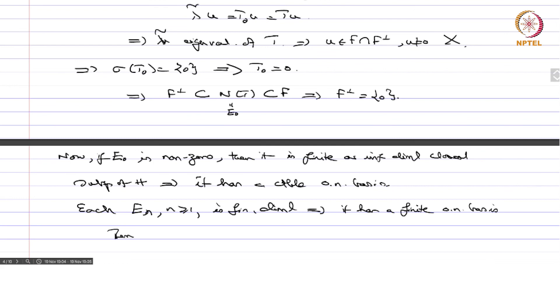Each E_n, n ≥ 1, is finite dimensional and has an orthonormal basis. Then the union of all these orthonormal bases is an orthonormal basis for H since F perp equals 0, that is F is dense.